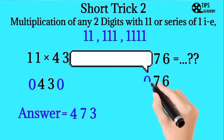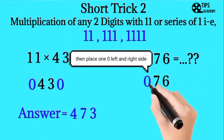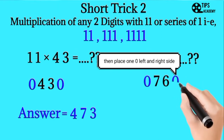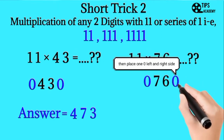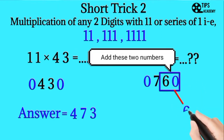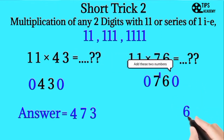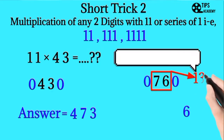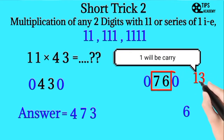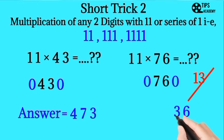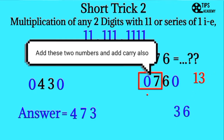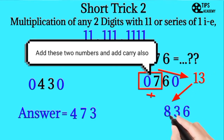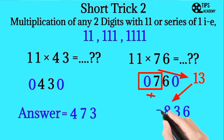Take another example: we want to multiply 11 with 76. We count the total ones and place one less zero on the left and right side. Then we add 2 numbers and write down, then add the next two numbers. The result will be 13; we place 3 down and 1 will be carry for the next number. We add it and write down. This will be the answer.